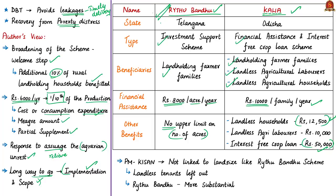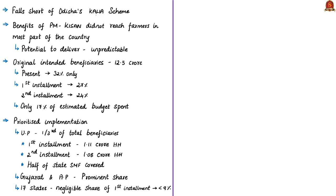Since the Raitubandu scheme provides financial assistance based on land size, the author calls it more substantial than the PM-Kisan scheme. Comparing PM-Kisan with the Kalia scheme, the Kalia scheme also supports poor rural households that do not own land, which the PM-Kisan scheme does not do as of now. So this is one of the drawbacks of PM-Kisan. Another problem is that even though two installments have been provided, the benefits did not reach farmers in most parts of the country, particularly as the cropping season had already started.